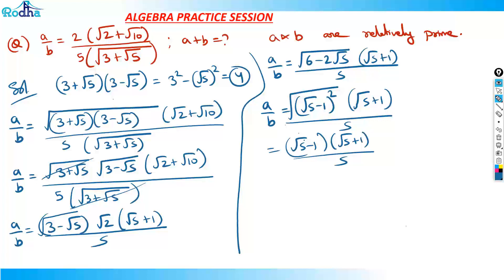This becomes (√5 − 1)(√5 + 1) / 5, which is a difference of squares: (√5)² − 1² = 5 − 1 = 4. So a/b = 4/5. Therefore a = 4 and b = 5, giving a + b = 9. The key idea was to break the expression under the root into the form (√5 − 1)² using the perfect square identity.